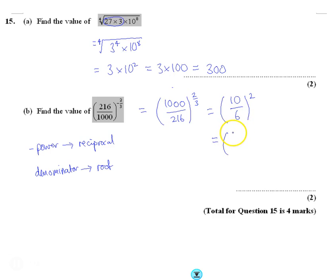So 10 over 6 is really 5 over 3, and then it's all squared. Then I'm going to square the top, square the bottom, which gives 25 over 9.